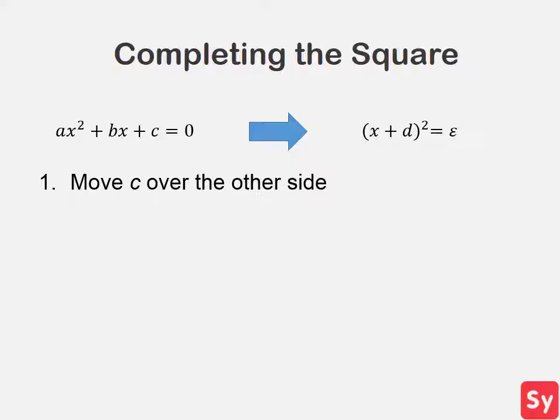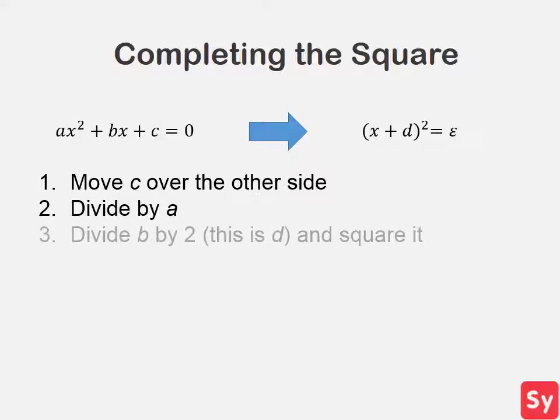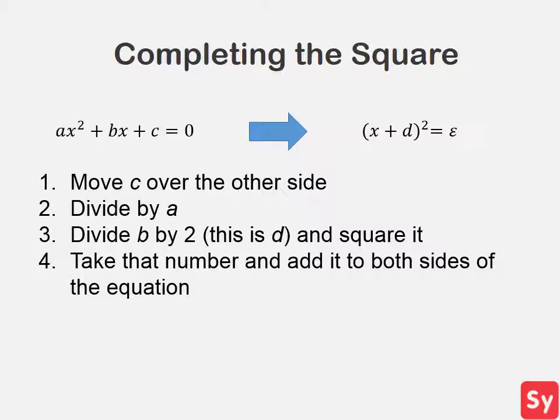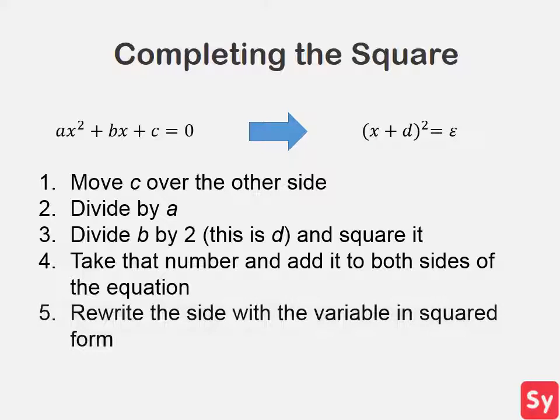First, you move c to the other side. Then you divide the equation by a. Next, divide b by 2 — this is what d is equal to — and square it. Next, add this to both sides of the equation. Next, rewrite the side with the variable in square form: x plus d, squared.